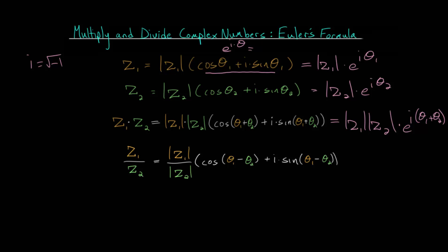Likewise, this division can be rewritten as the quotient of their magnitudes — their moduli — multiplied by E to the I times theta 1 minus theta 2. So we still find the quotient of the magnitudes and subtract the angles when dealing with division. Now I'd like to look at specific example problems for both multiplying and dividing complex numbers using these forms.